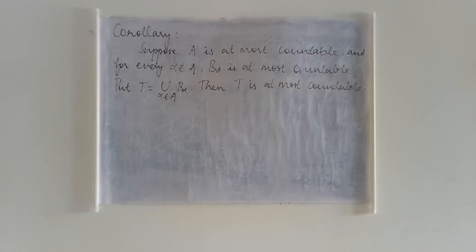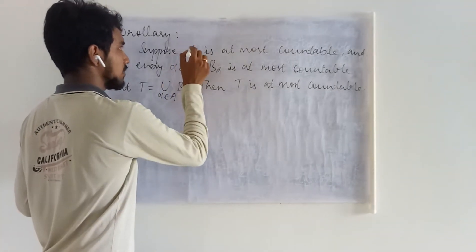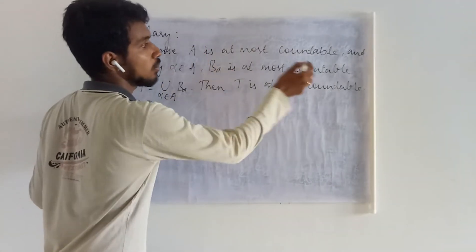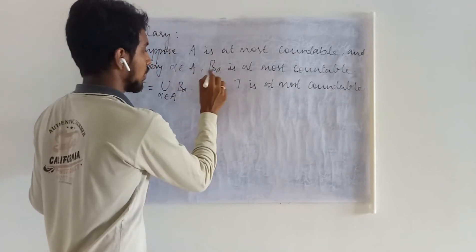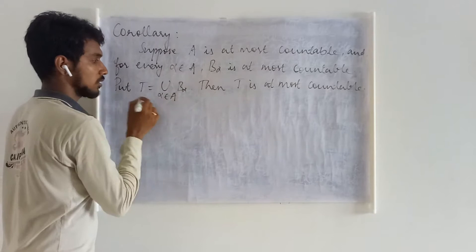The corollary to the previous theorem tells you that suppose you have an at most countable set A, and for each element in A we associate some at most countable set, and we are making the union of these at most countable sets.